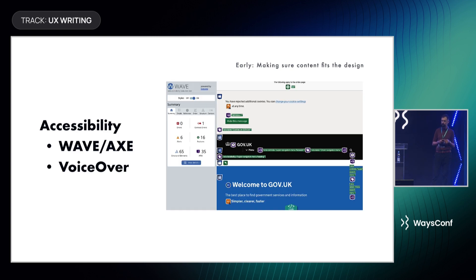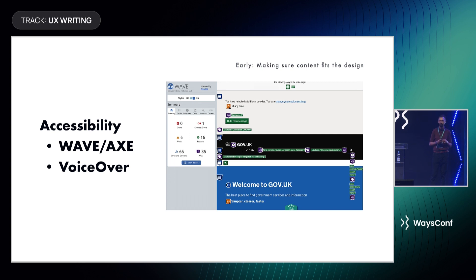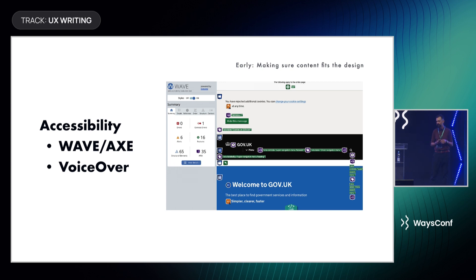Another important thing, especially for me, is that if you're changing an existing product or pages, you can check the current accessibility status using basic accessibility tools like Wave or AX, and use VoiceOver to check if it reads well. I would recommend not skipping that step.